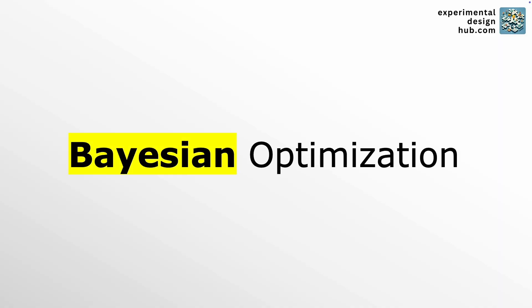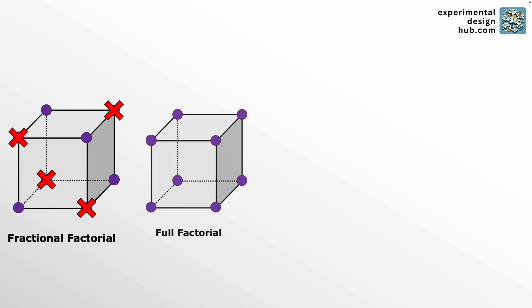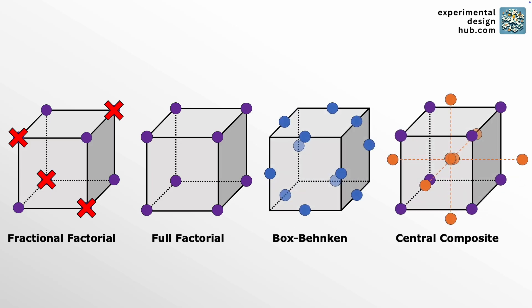There are different design plans for different problems — like fractional, full factorial, Box-Behnken, central composite and so on. It's a lot to remember. And the biggest downside is that once you plan all the experiments, you have to run them all. Even if partway through you suspect that some are unnecessary, there's no built-in way to adjust based on what you're learning. But that changes with Bayesian optimization.